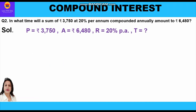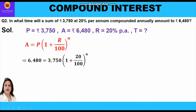Given: principal is rupees 3750, amount is rupees 6480, rate of interest is 20% per annum, and time period we have to find. Applying the formula: 6480 = 3750 × (1 + 20/100)^n. Cross multiplying, we write 6480 upon 3750 = (120/100)^n, which simplifies to (12/10)^n.